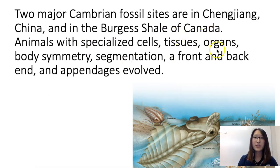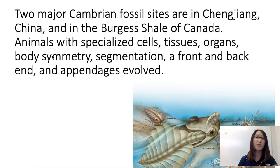They have tissues, organs, and body symmetry. You can think about animals with no body symmetry, bilateral symmetry, and radial symmetry.